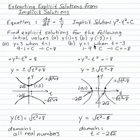But the situation is different if I slightly change those initial conditions. Let y be 1 when t is minus 3. Then I insert and I have 1 minus 9 is c, so c is negative 8. Positive y squared minus t squared is negative 8.